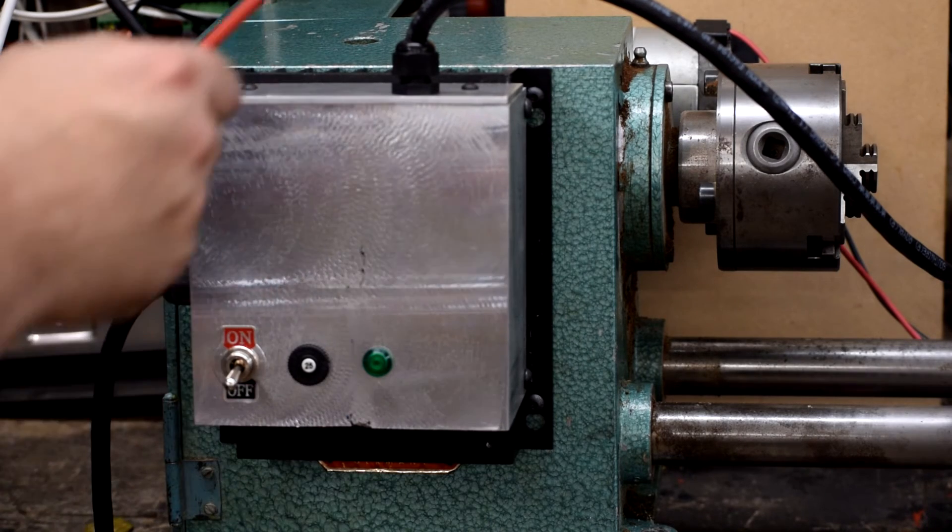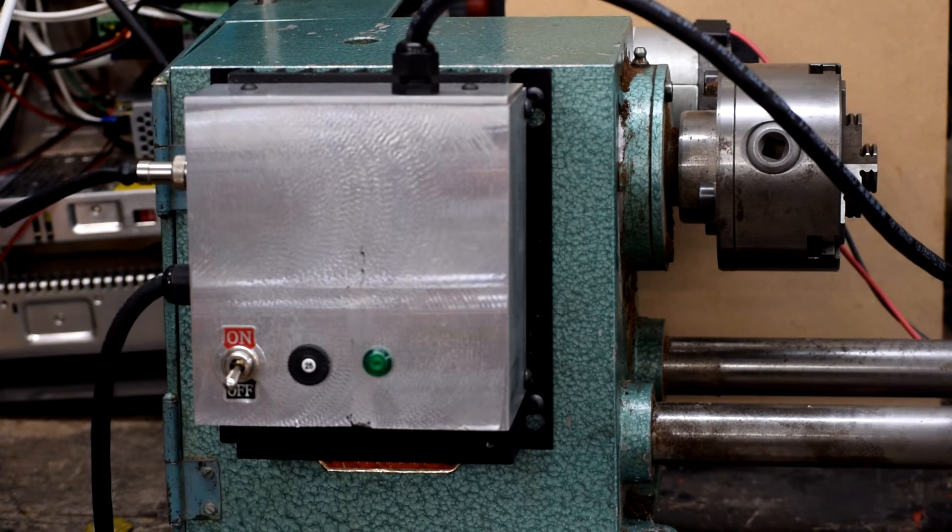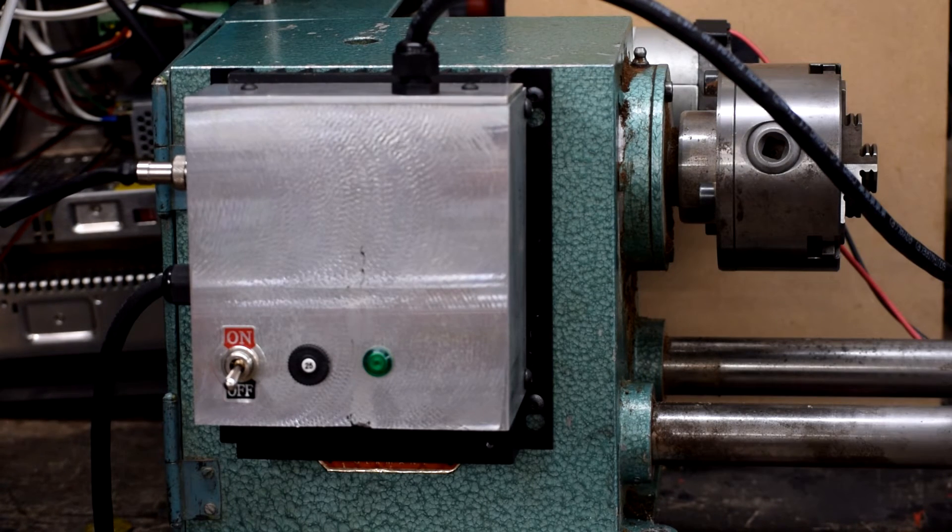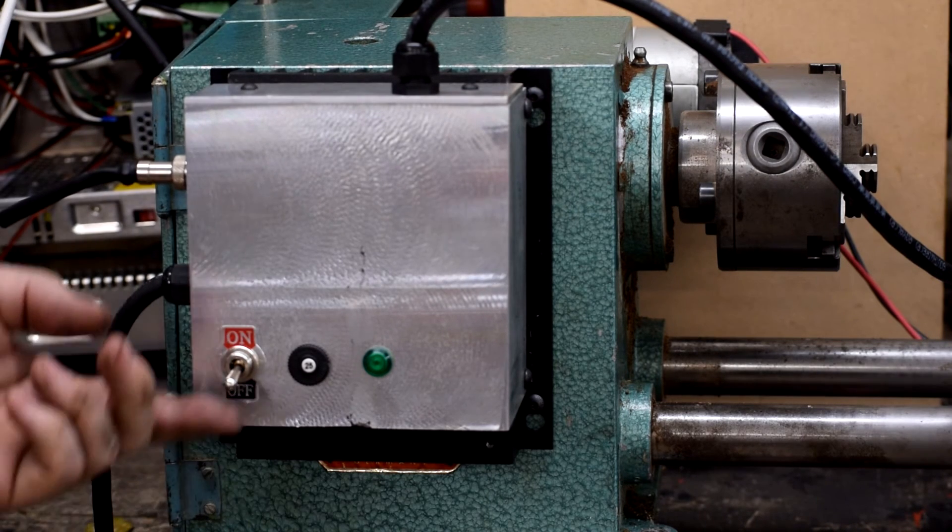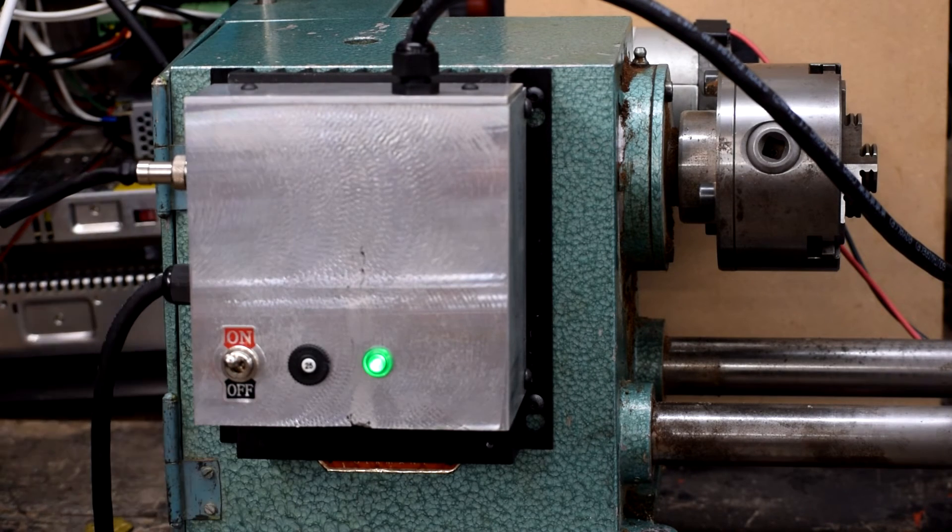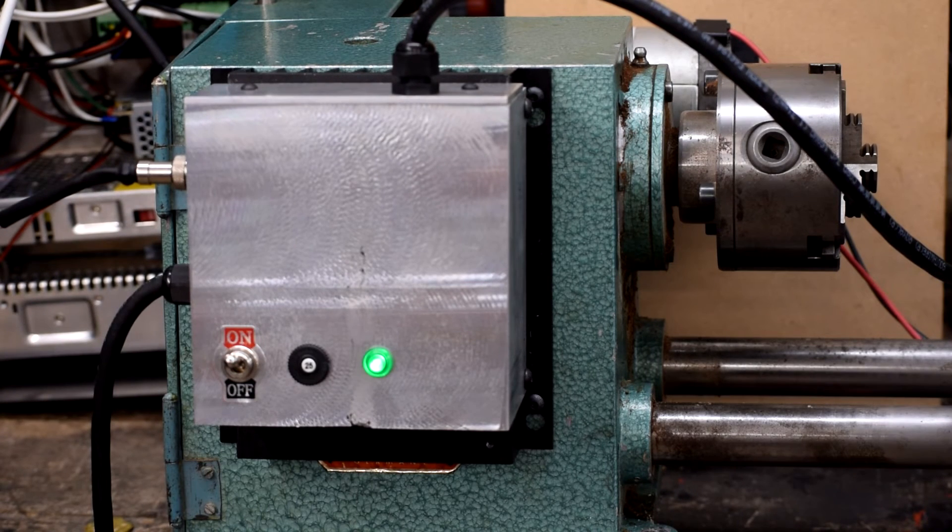So we power up the controller. Power up the motor driver. Power up Mach 4. Enable. Go to jogging and just bump that Z-axis. It worked. And let's go turn this thing on. M3-S1000. Cycle start.